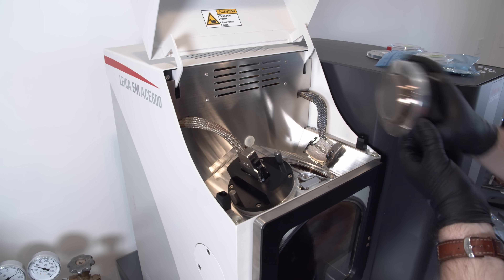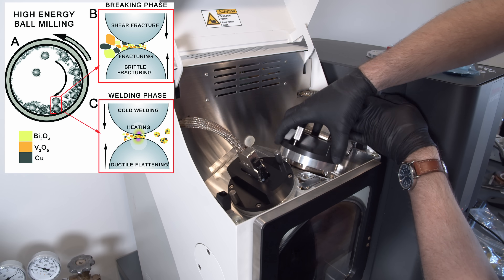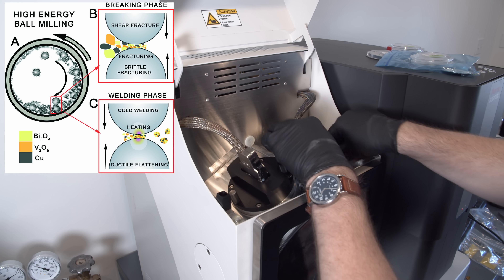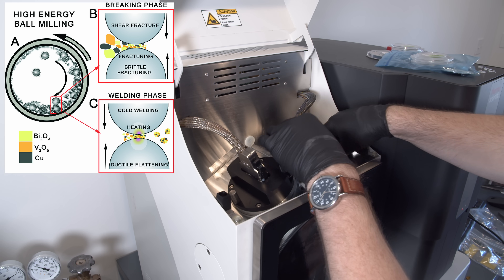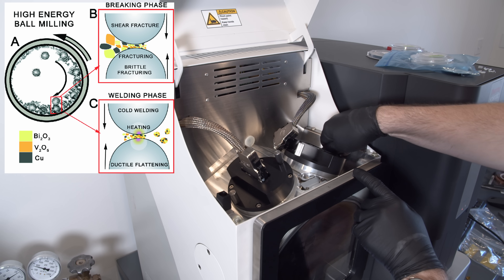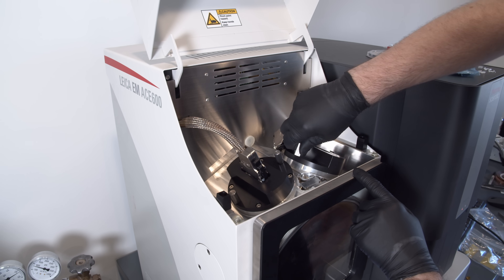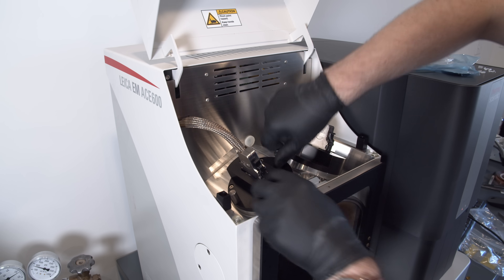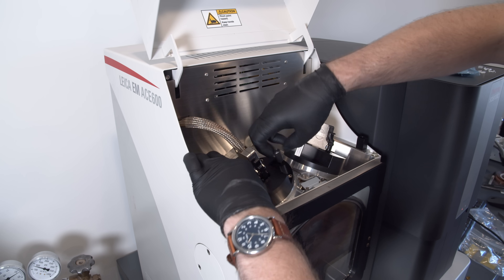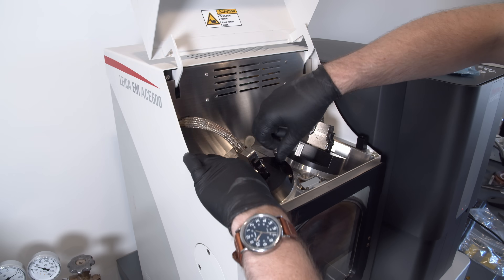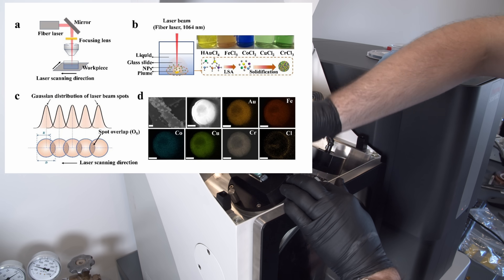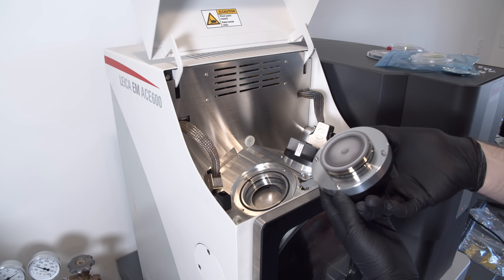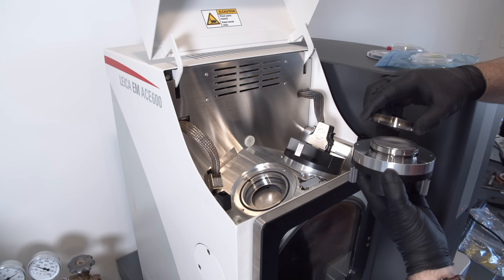Another common method is to take all the elements and put them in a high energy ball mill and just mash them into each other repeatedly. Eventually the individual grains will plastically smush into each other and you'll start to form these alloys as a cold process. Yet another method starts with precursor metals that are chlorides of the metal, and you can hit it with a laser and it decomposes into nanoparticles of the high entropy alloy.